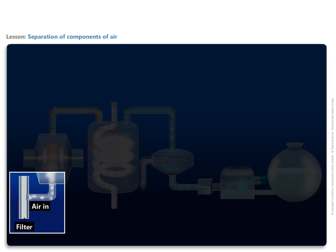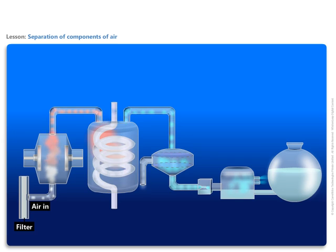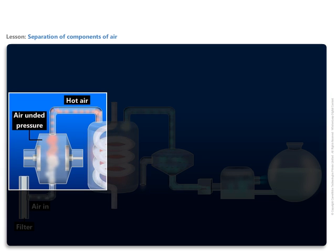Air is first passed through a filter to remove impurities like dust particles. Filtered air is passed through compressors and it is compressed to very high pressures around 200 atmospheres.